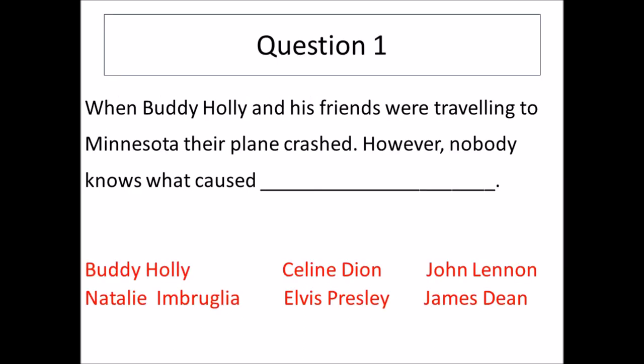Let's look at question one. Put the reading text in front of you and the question page, because they are separate. Let's read the question: When Buddy Holly and his friends were traveling to Minnesota, their plane crashed. However, nobody knows what caused blank. First, let's identify the keywords. Buddy Holly is the name of a person — this can be a keyword. Minnesota is the name of a place. These are enough to lead us to the right paragraph and subheading.